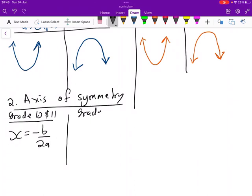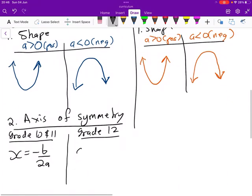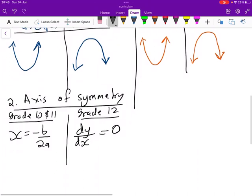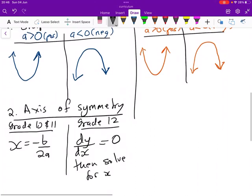Or we can also use grade 12 calculus, where you can just simply say that set dy over dx to be equals to 0. Then solve for x. The x that you get would be your axis of symmetry.